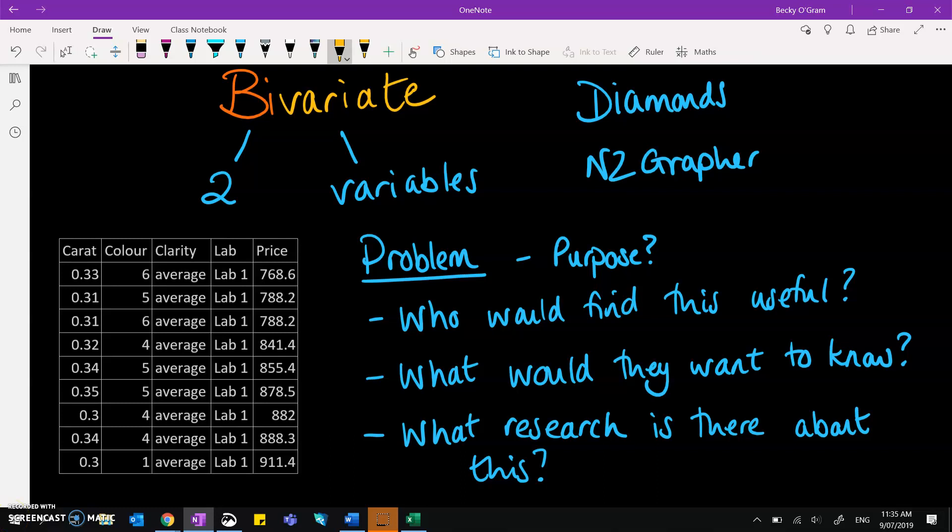So for this one, I'm going to investigate carat and price. Now carat was defined as the size of the diamond in weight. So one carat is 0.2 grams and the price is in US dollars.